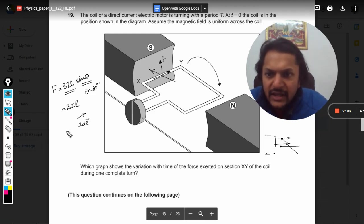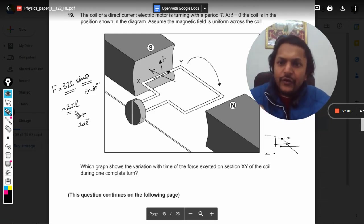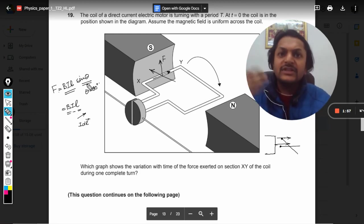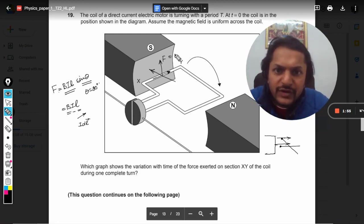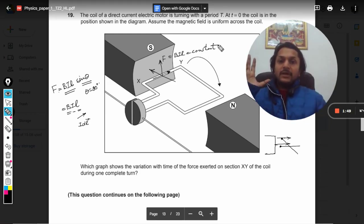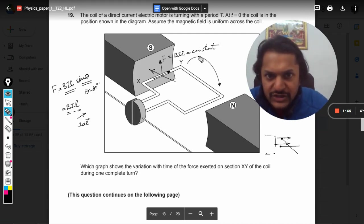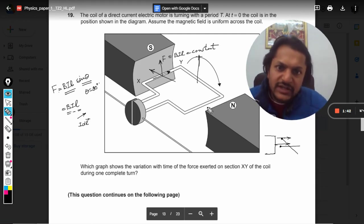And the magnitude will be equal to BIL. So magnetic field is uniform, current is constant, and L is also the same, and there is no problem with θ also. So this force is BIL which is a constant force. It is not variable, it is constant force. So once it crosses the highest point and it moves to this position, Y comes here and X comes here, the current will change its direction.